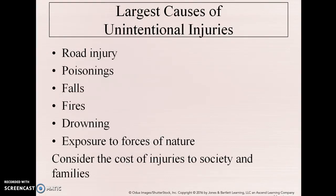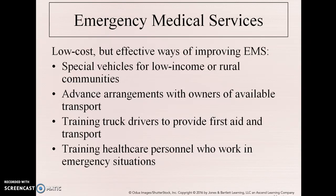Chapter 14 briefly covers unintentional injuries. Major causes include fires, drowning, exposure to forces of nature such as extreme heat or cold, poisonings, and road injuries. These all cost society and families when wages are lost and when families need to take care of sick members at home and can't work.